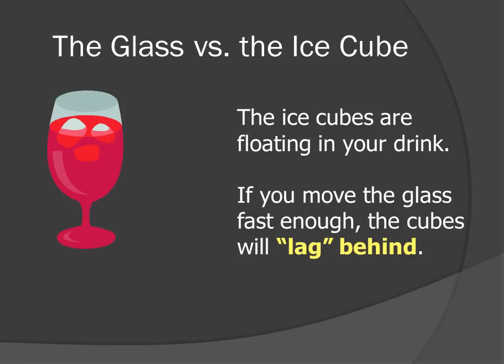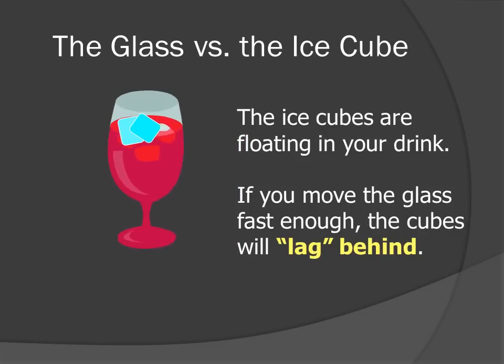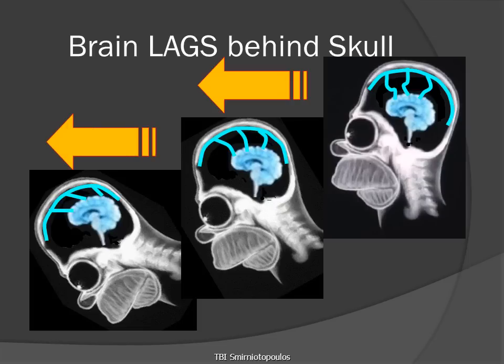If you imagine a glass with ice cubes and you move the glass very rapidly, the movement of the ice cubes lags behind the movement of the glass. A similar thing happens inside the head. Normally, the cerebrospinal fluid is supporting the brain and the brain is floating in CSF. So if we imagine the brain floating in CSF, the bridging veins must connect the brain to the superior sagittal sinus. If we move the skull very rapidly, the brain lags behind the movement of the skull and will therefore stretch the bridging veins.